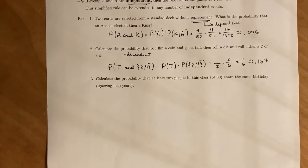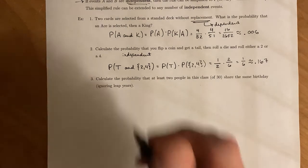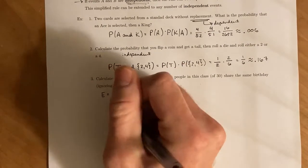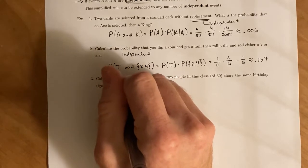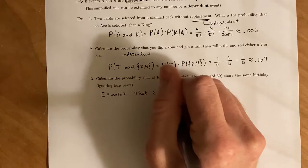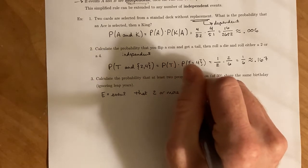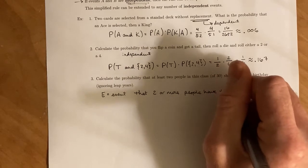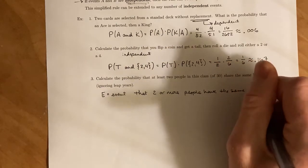And now this is going to be kind of tricky. But we want to calculate the probability that at least two people in this class, let's say that there's 30 share the same exact birthday. So what we'll do is say E is going to be the event that two or more people have the same birthday.